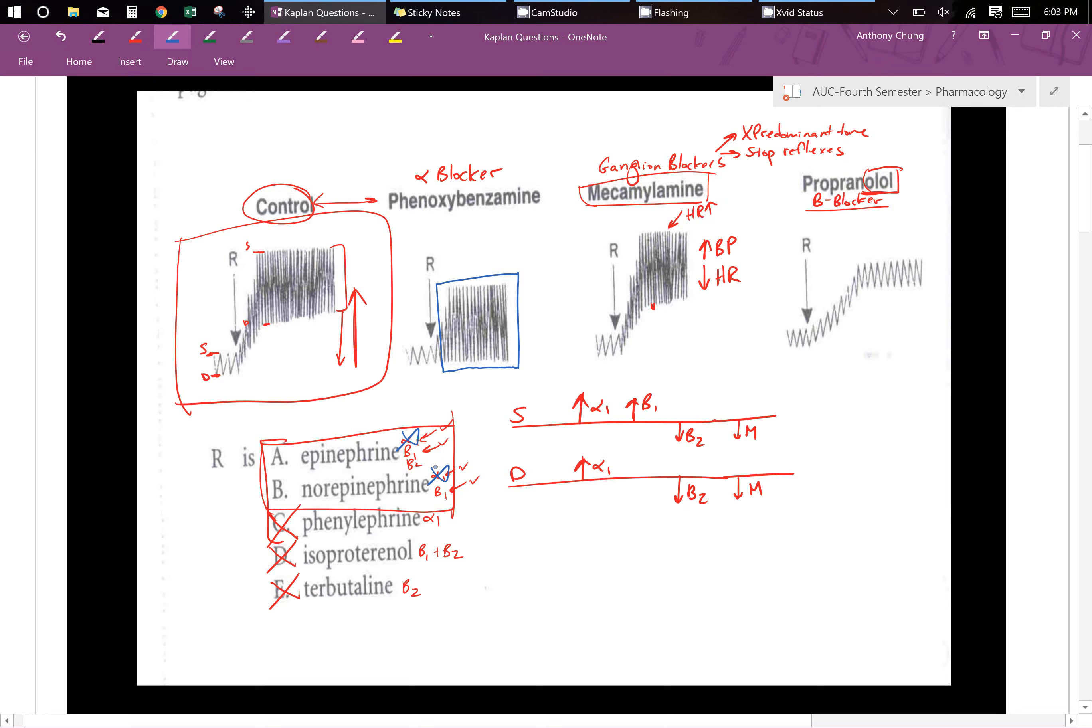So if you blocked your alphas, you're left with beta 1, beta 2, beta 1 over here, or beta 1 and beta 2.